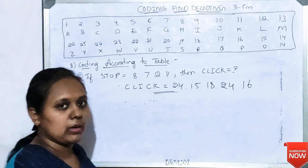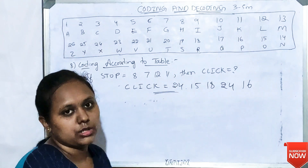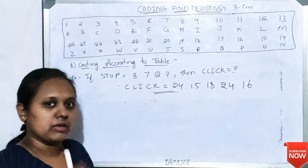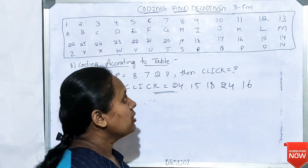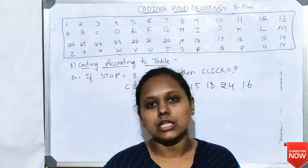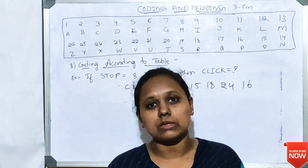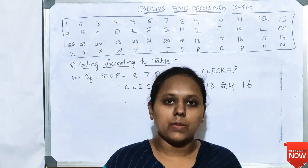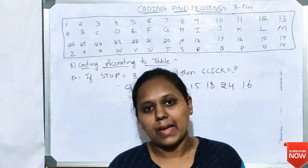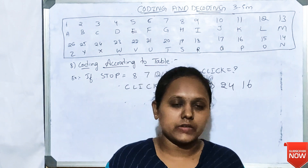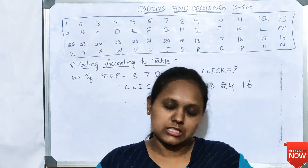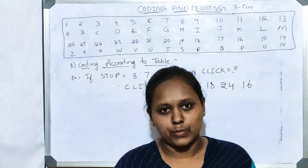So 24, 15, 18, 24, 16 is the answer for CLICK. The coded word follows the reverse order table pattern. You can see all types of patterns covered here — forward, backward, mixed, and table patterns. Please practice all of them.